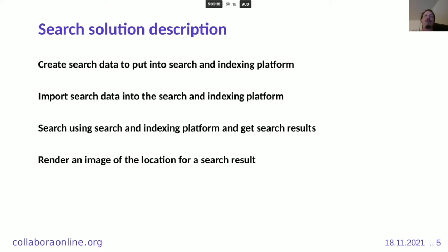To realize this idea, we need to create the search data and put it into an indexing platform — into the search database. Then we import it inside the search data platform and perform a search to get a result. After that, we render an image of the location of the search result. The first three steps are already implemented elsewhere, but the last one — rendering the location inside the document to show the user — is what we are adding.